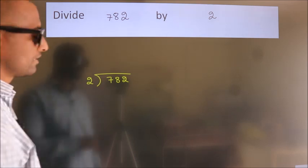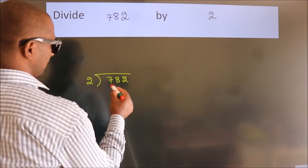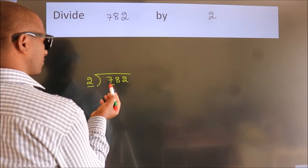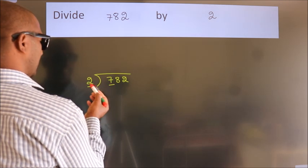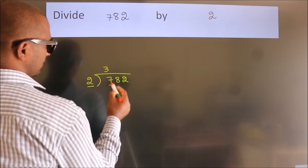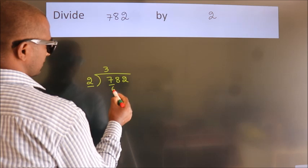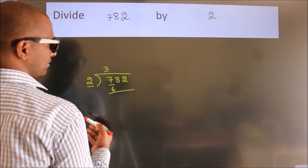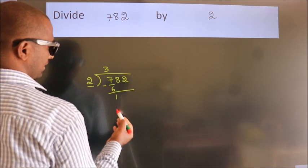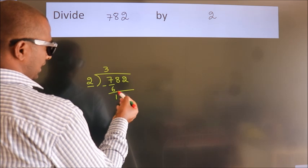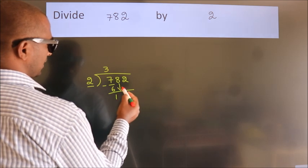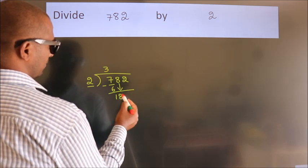Next, here we have 7, and here 2. A number close to 7 in the 2 times table is 2 threes, which is 6. Now we should subtract — we get 1. After this, bring down the beside number: 8 down, so 18.